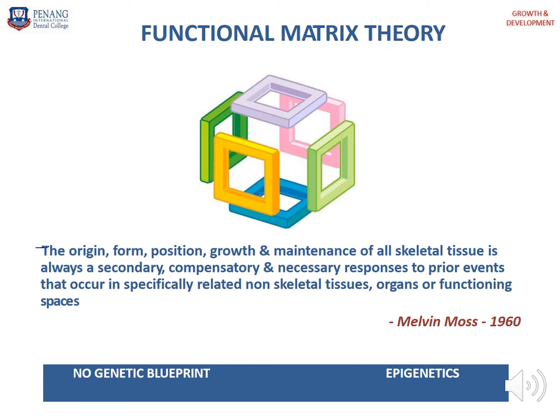This gives rise to the functional matrix theory, suggested by Melvin Moss in 1960. Moss stated that the origin, form, position, growth, and maintenance of all skeletal tissue is always a secondary, compensatory, and necessary response to prior events that occur in specifically related non-skeletal tissue, organs, or functional spaces. In the functional matrix theory there is no genetic blueprint — it is not related to genetics but is mainly epigenetic.